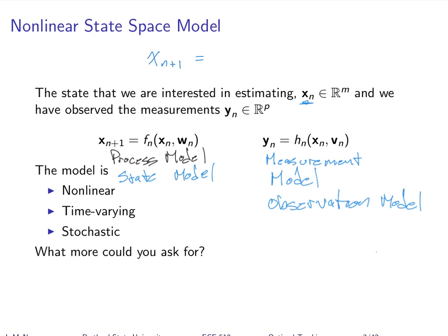A student asks whether in the limit p would equal m, or whether p must be greater than m. The instructor says no — there are no constraints on p and m; they're usually of different dimensions and it's rare for them to be the same. You might wonder how you can have fewer measurements than the dimension of the state you're estimating — wouldn't that be underdetermined? The answer is no, because the prior is what keeps it well-conditioned. Having that prior knowledge means there's no constraint on the relationship between m and p.